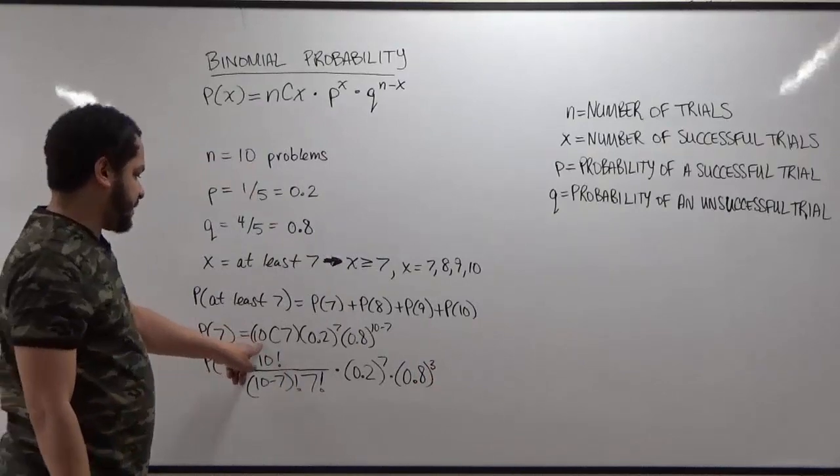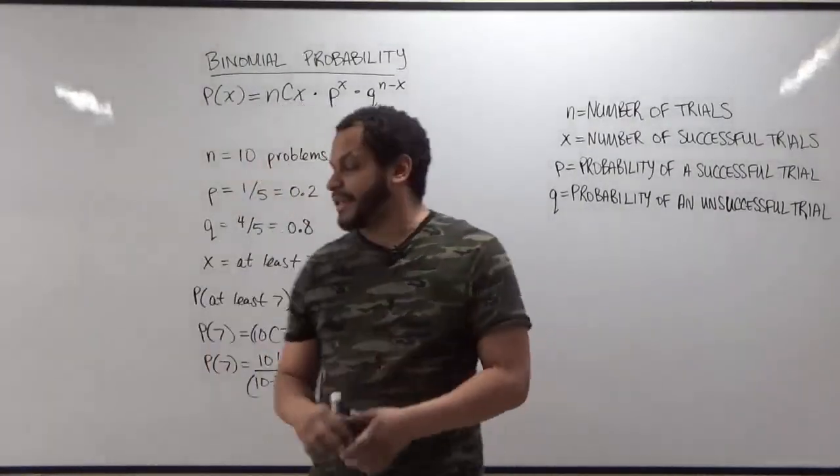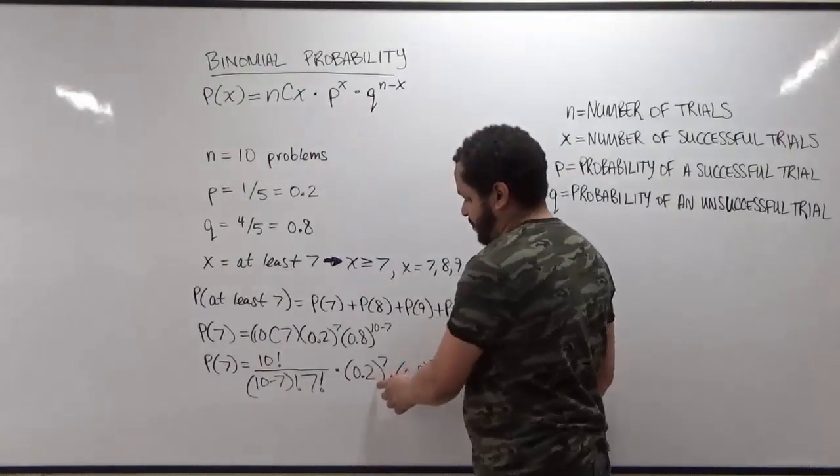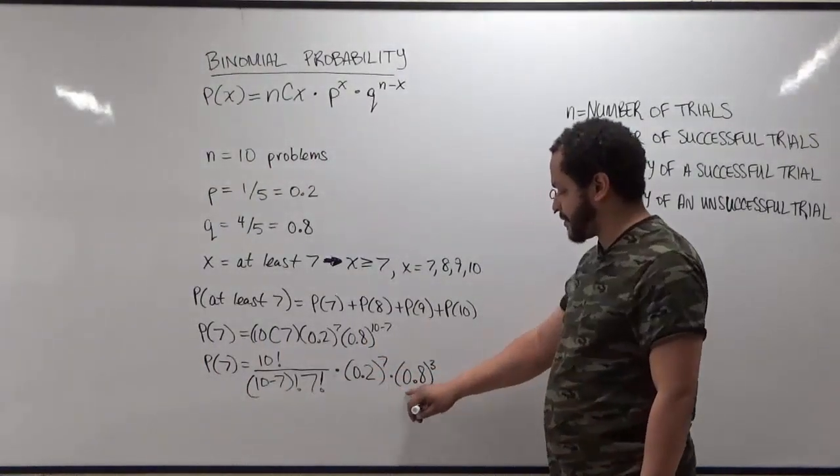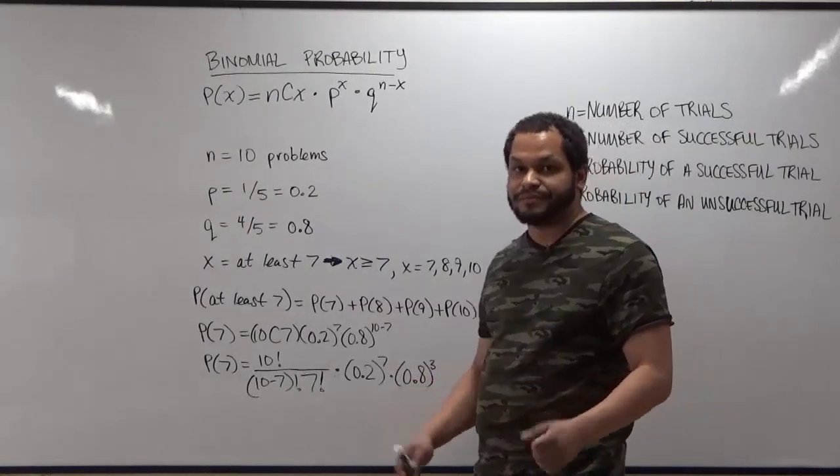Now if you have a calculator, you can actually just run the 10 combination 7 on your calculator with no problem. And then have that multiplying with the 0.2 to the power of 7, and then have that multiply with the 0.8 to the power of 3. And that will give you the result.